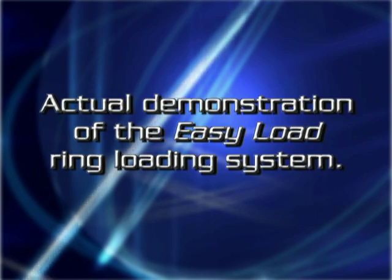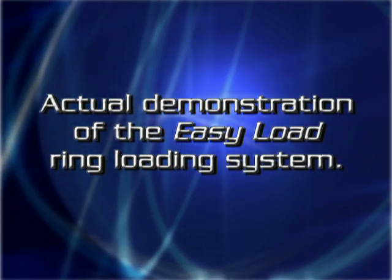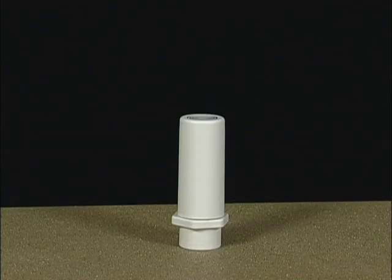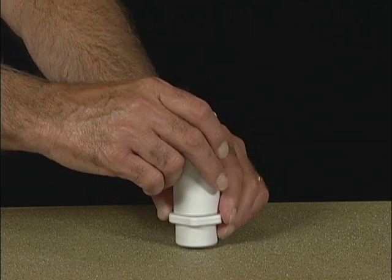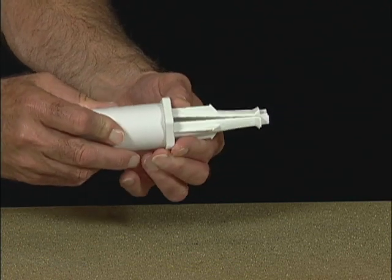This actual demonstration will show the ease in using the Easy Load Ring Loading System. Again, you first separate the handle from the fingers by pulling them apart. Then turn over the fingers and push the base into the handle until it bottoms out.